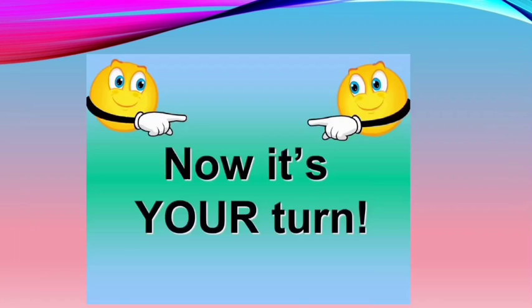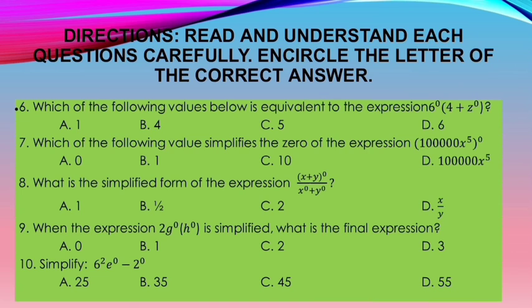Now it's your turn. Directions: Read and understand each question carefully. Encircle the letter of the correct answer. Which of the following values is equivalent to the expression 6 to the power of 0 times the quantity 4 plus z to the power of 0? A. 1, B. 4, C. 5, D. 6, E. 7.